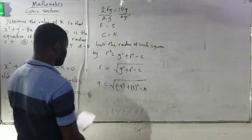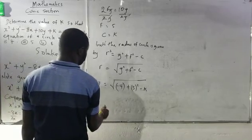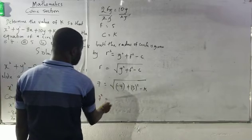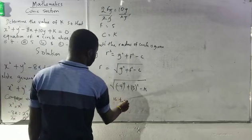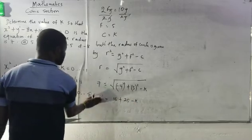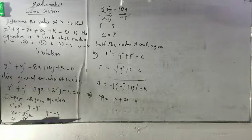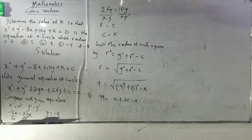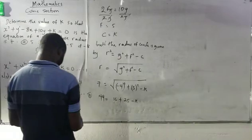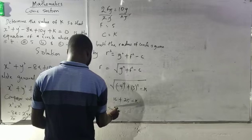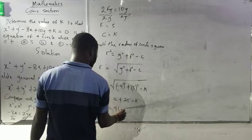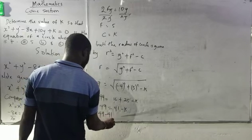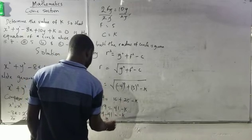I can decide to say 7² equals to (-4)² + 5² - k. This is going to be 16 + 25 - k. 7² is 49, which I will be having 49 equals to 41 - k.